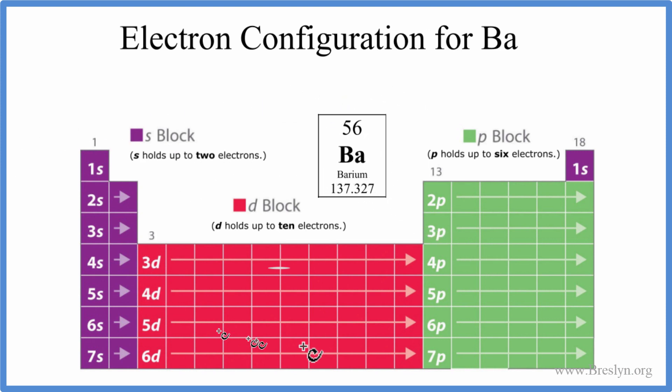So we'll use this periodic table here broken up into orbital blocks. You can also use this chart, there's a link in the description how to do that. This is really, I think, the preferred method for writing electron configurations though.